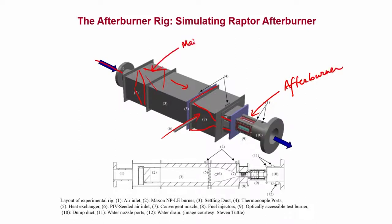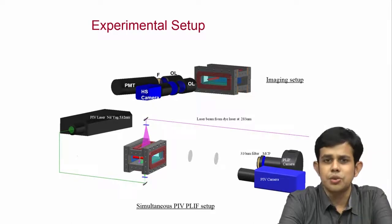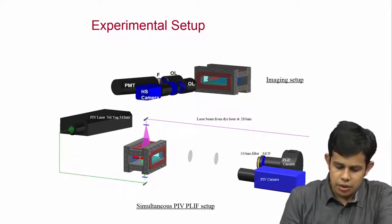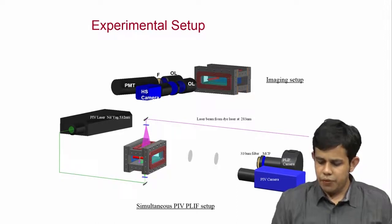This is the main burner representing the gas turbine main combustor, and then we can have the flame and study the flame blow-off mechanism here. The experimental setup also has a PMT to monitor the overall emission, a high-speed camera with an intensifier focused into the test section, a PIV laser beam going in for flow visualization, and a PLIF camera. We want the PLIF laser beam going in at the same place at almost the same time.